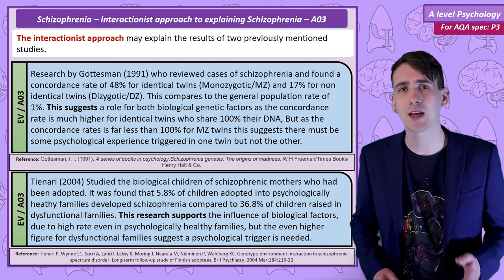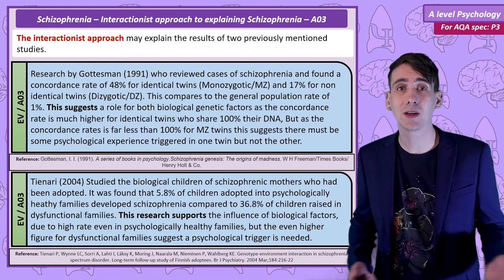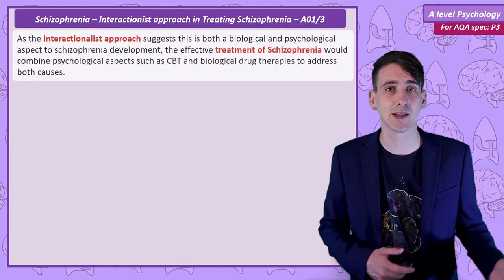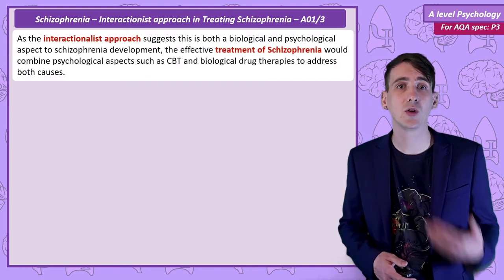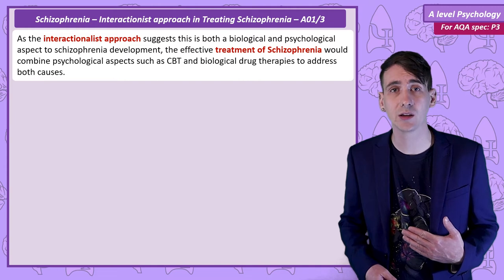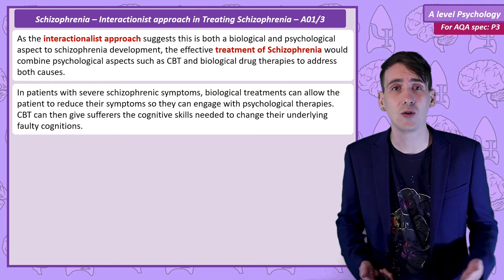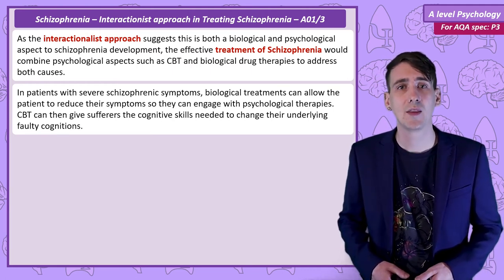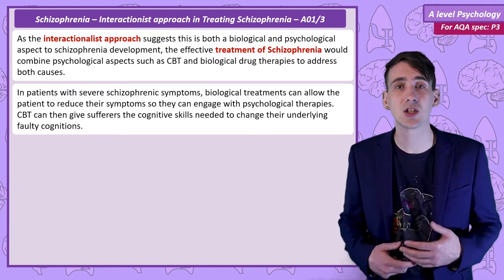That covers the interactionist explanation of how schizophrenia is caused and the supporting research studies. It should make sense that the interactionist way of treating schizophrenia is by combining antipsychotic medication — like typical and atypical antipsychotics — with a psychological talking therapy like CBT. With severe cases of schizophrenia, patients are often unable to engage with the difficult process of CBT or family therapy. However, if medication can reduce the symptoms of schizophrenia, then the person can go on to use CBT and gain the skills needed to change faulty cognitions.